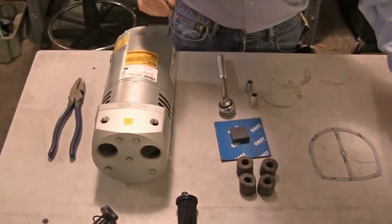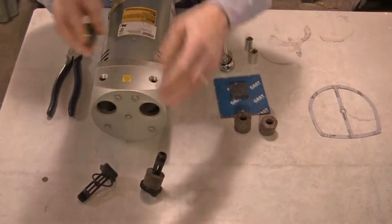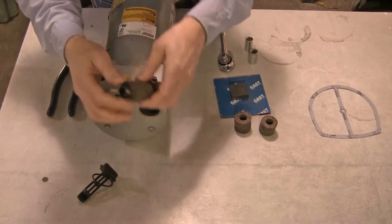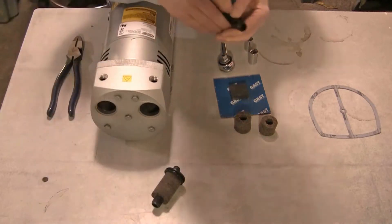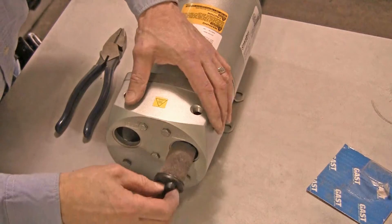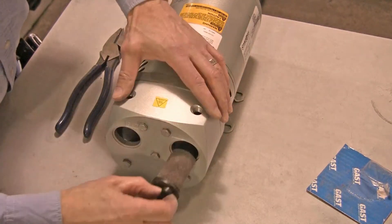Remove the old filters from the filter screws and clean the o-ring. Reinstall the o-ring and install the new filters. Reinstall the filter screws into the muffler box, taking care not to over-tighten the screws.